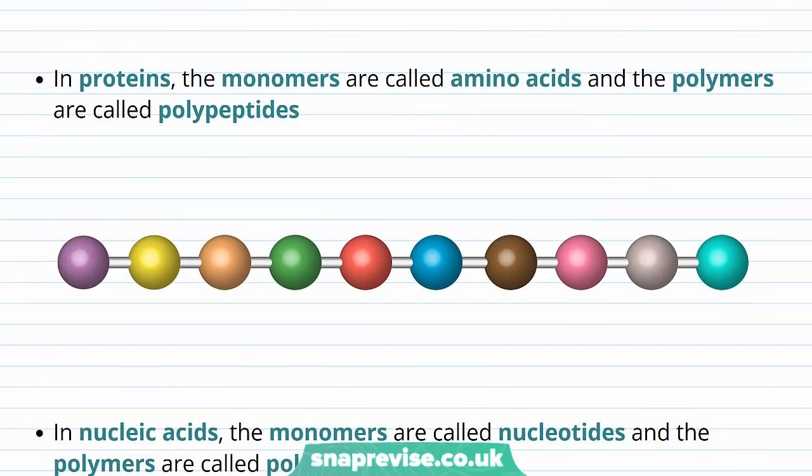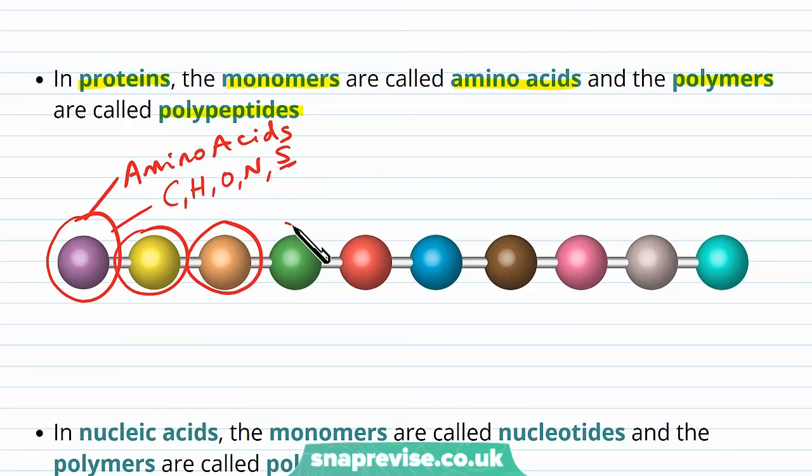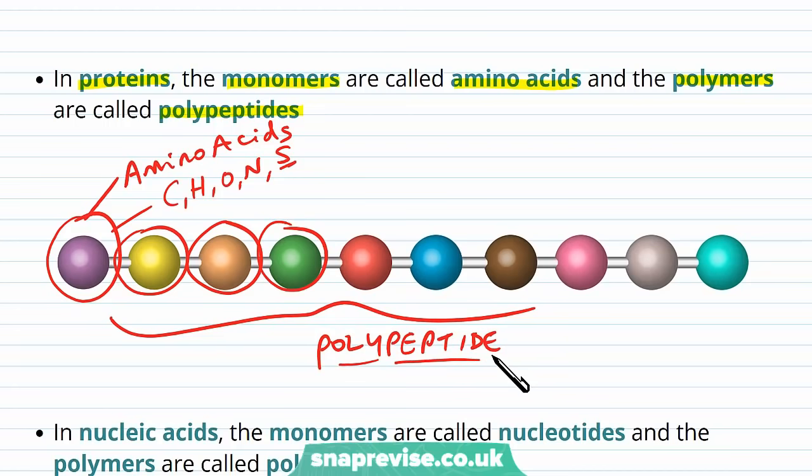When we're talking about proteins, it's slightly different. The monomers, we call them amino acids. And then the polymers, when lots of these amino acids join together, are called polypeptides. So it's not as simple as carbohydrates this time. But we have one unit as being an amino acid. And there are lots of types of amino acids. And remember, these contain the elements of carbon, hydrogen, oxygen, nitrogen, and sometimes sulfur. And then as we join these up into long chains, we form one long polypeptide.